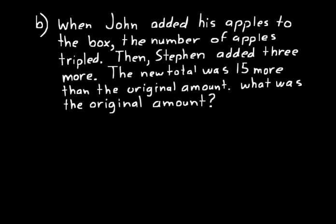Let's do another word problem. Let's read it through once first. It says: when John added his apples to the box, the number of apples tripled. Then Stephen added three more. The new total was fifteen more than the original amount. What was the original amount? So we're trying to find the original amount — that's our unknown value. We have one unknown, so we need one equation.